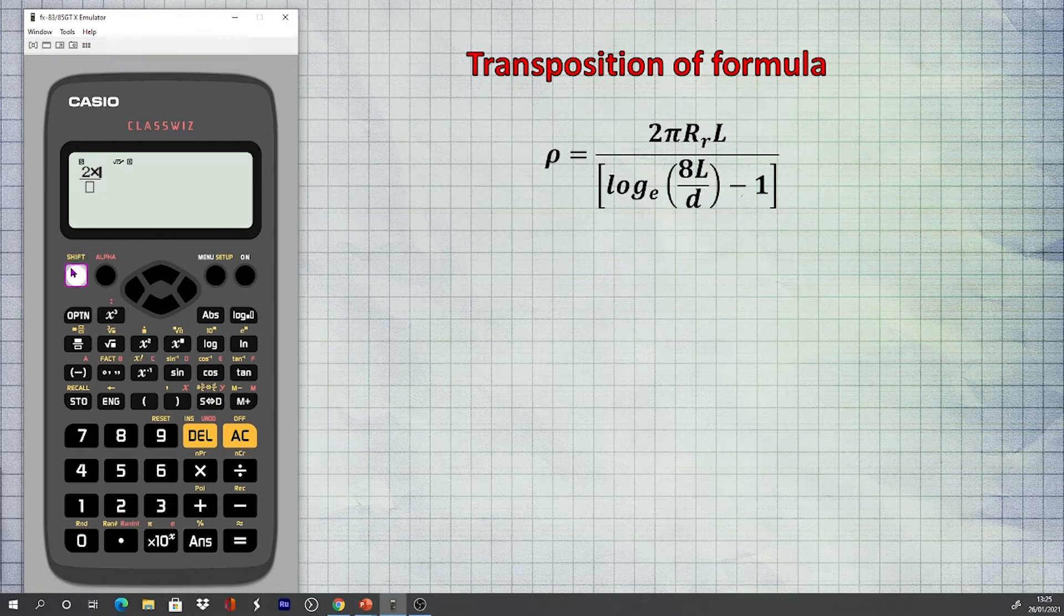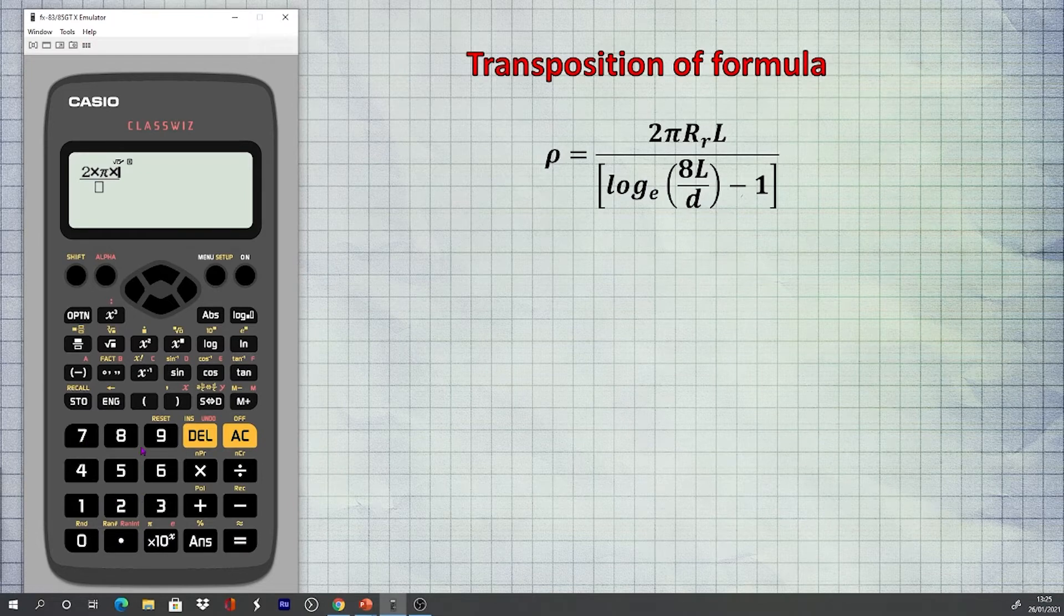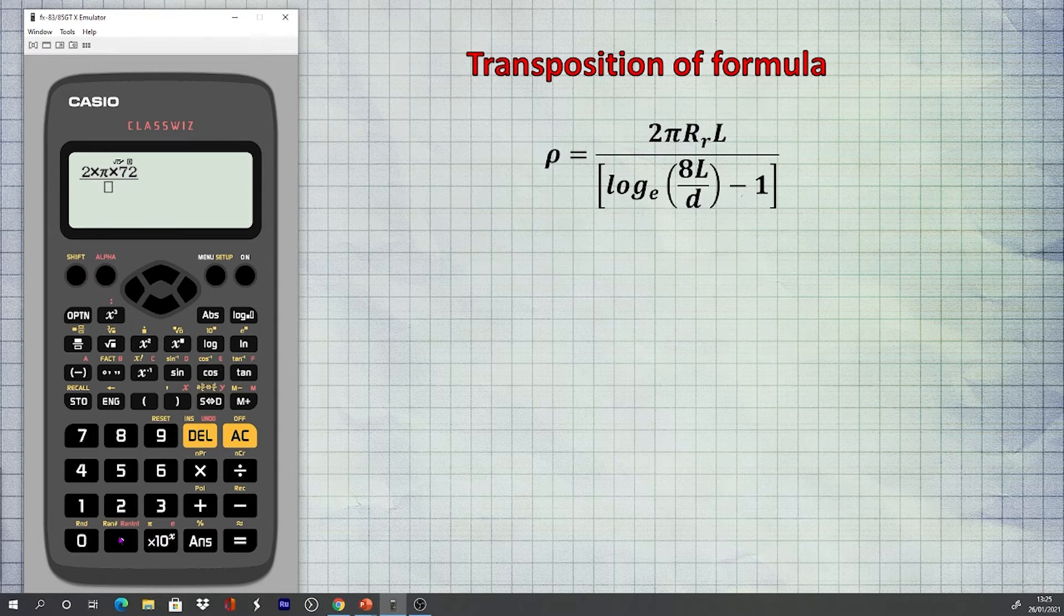If we know the resistance of the electrode, we can transpose the formula to make resistivity the subject of the calculation. Using the same values from the previous example, it can be seen that the result can be confirmed.